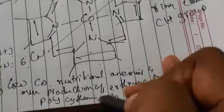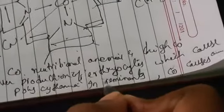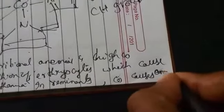Deficiency of cobalt causes nutritional anemia. Excess cobalt causes overproduction of erythrocytes leading to polycythemia. In ruminants, cobalt deficiency causes anorexia. These are the biological functions of cobalt and zinc. Thank you.